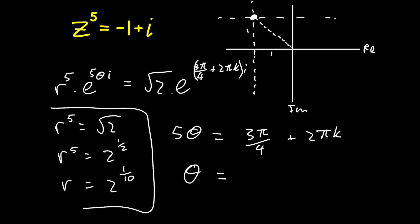So let's continue to solve for theta. Theta is now equal to three pi by 20, because I divided this by five, plus two pi k by five, because I divided this by five as well. So I've divided every term by five and solved for theta.